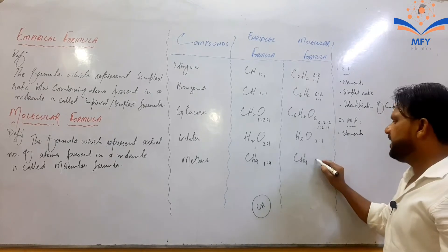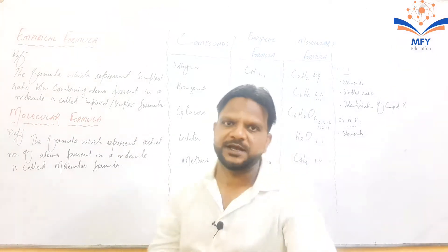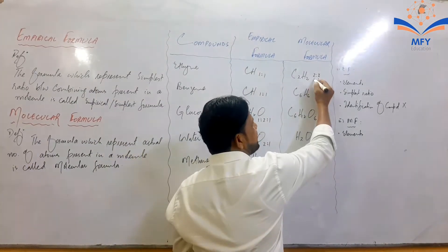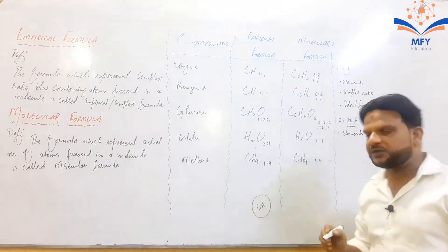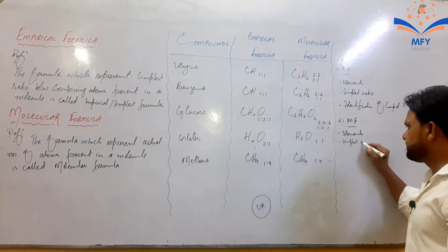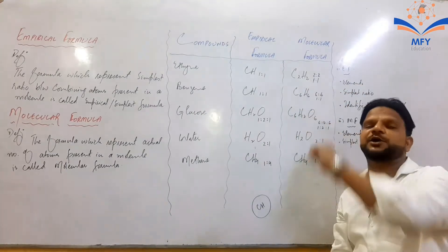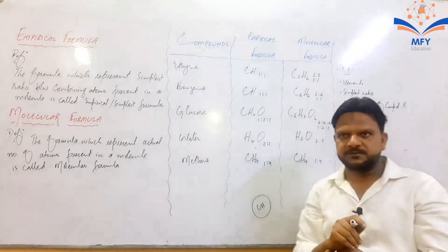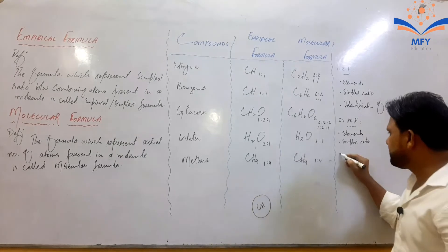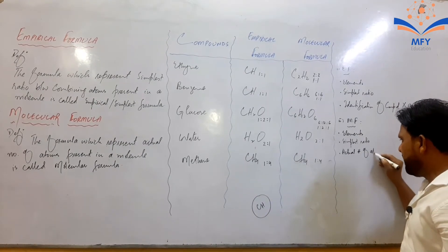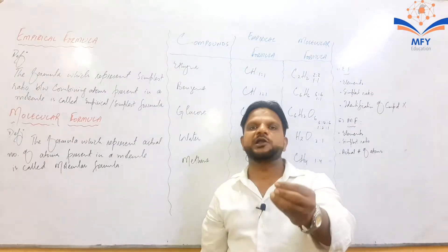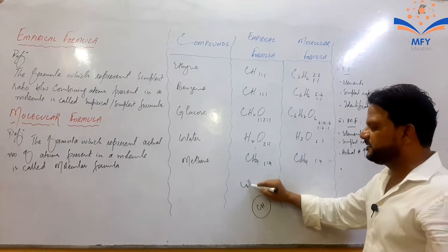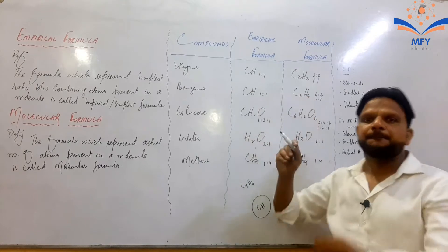تو molecular formula دو ریشو دے رہا ہے — ایک simplest ratio اور ایک actual number of atoms۔ Empirical formula صرف simplest ratio دیتا تھا، جبکہ molecular formula actual number of atoms بھی بتاتا ہے — جیسے ethane میں 2 carbon اور 2 hydrogen، benzene میں 6 carbon اور 6 hydrogen۔ اس کا مطلب molecular formula کسی بھی molecule میں موجود اناصر کی صحیح تعداد — actual number of atoms — بتاتا ہے۔ اگر ہم C₆H₆ لکھیں تو یقیناً یہ benzene کا molecular formula ہے، اور C₂H₂ ایتھائین کا۔